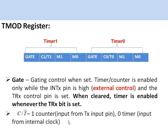In the TMOD register, whenever a timer is configured as a counter, the C/T-bar bit for Timer 0 and Timer 1 both need to be set to 1. If the C/T-bar bit is set to 1, it is configured as a counter. If the bit is set to 0, it is configured as a timer and will receive its clock from the internal crystal.